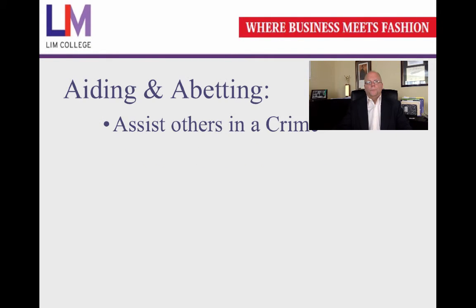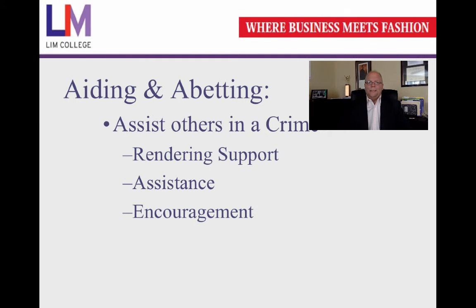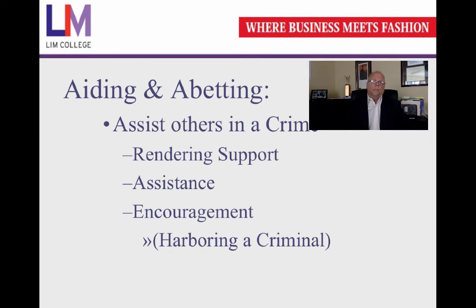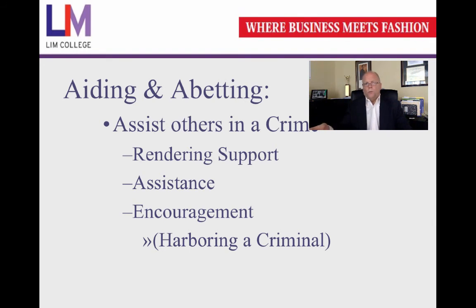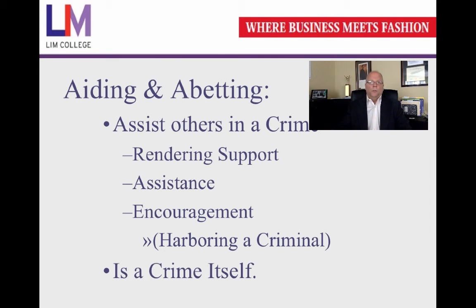Aiding and abetting means assisting others in a crime — rendering support, assistance, or even encouragement. Harboring a criminal is also considered aiding and abetting. This is where family members sometimes get themselves in trouble: if someone commits a crime, comes home, and a family member tells police he's not there, they can be charged with aiding and abetting. Like attempt, aiding and abetting is a crime in itself.